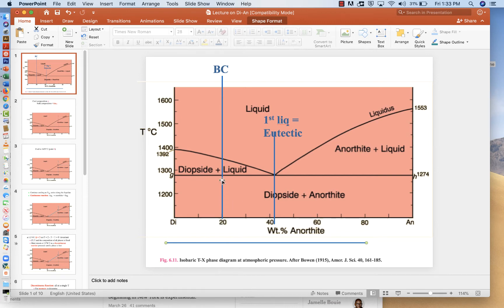As we heat that rock, some strange things are going to happen. We're going to hit 1274 and that's when we're going to create the first melt. But the melt won't look like the bulk composition. It's going to be much more anorthite rich. It's going to start melting at the eutectic.